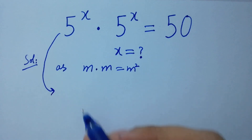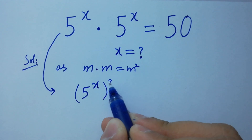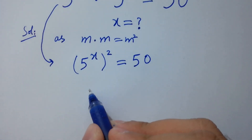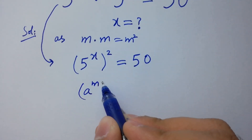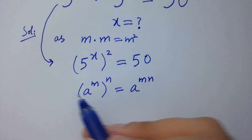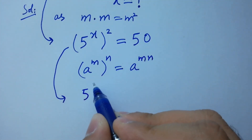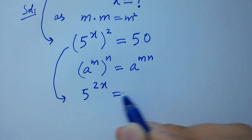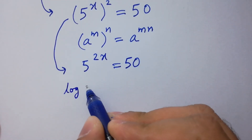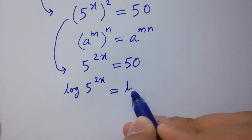Then it will be 5 to the power x, to the whole power 2, equal to 50. Using the rule a to the power m, to the whole power n, equals a to the power m×n, we have 5 to the power 2x equal to 50. Take log on both sides: log 5 to the power 2x equal to log 50.